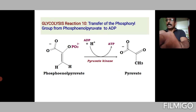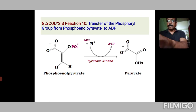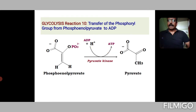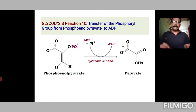Another example, again from glycolysis reaction 10, is a transfer of a phosphoryl group from phosphoenolpyruvate. The phosphoryl group from phosphoenolpyruvate is transferred to ADP so as to give ATP, and pyruvate is the product here. Again, pyruvate kinase is the enzyme involved in this reaction.